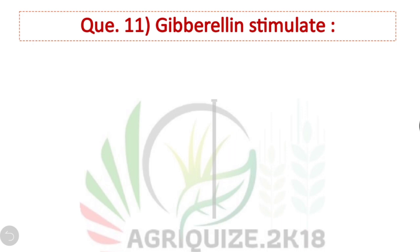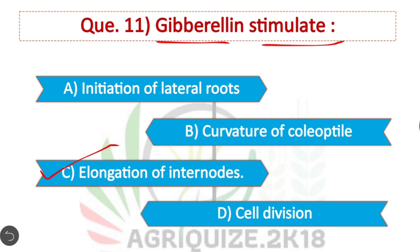Question 11: Gibberellin stimulates — Option C is correct. Gibberellin stimulates elongation of internodes. That's why the height of plants increases abnormally in foolish seedling disease.